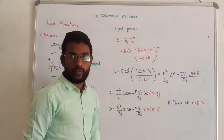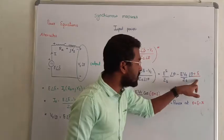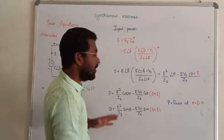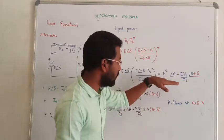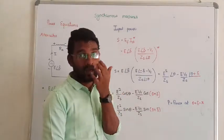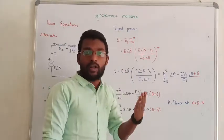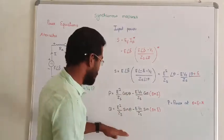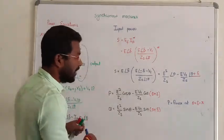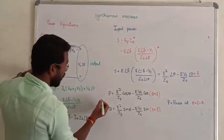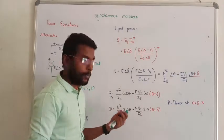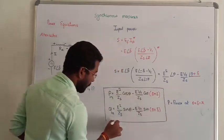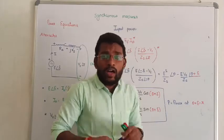From the apparent power, we extract real power and reactive power. In apparent power, the terms represented by cosine of theta give real power, and terms represented by sine give reactive power. This is the real power developed by the alternator on the input side — we can call it input real power — and similarly the input reactive power. These two formulas are very important and you should keep them in mind.